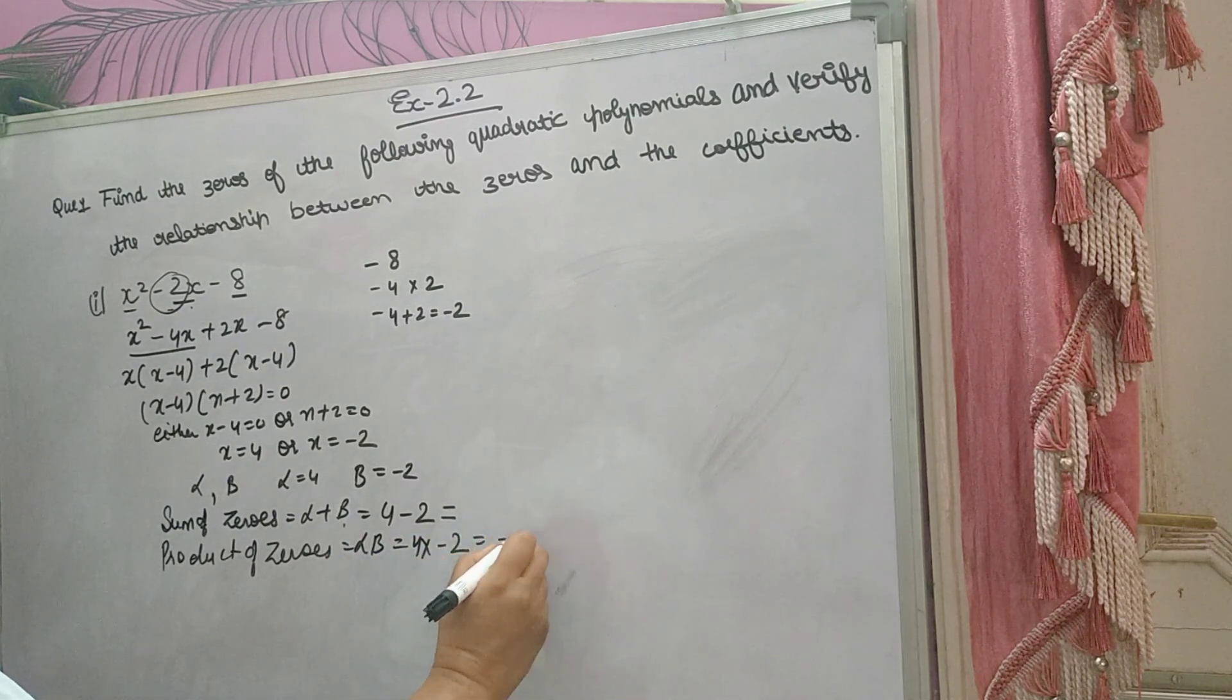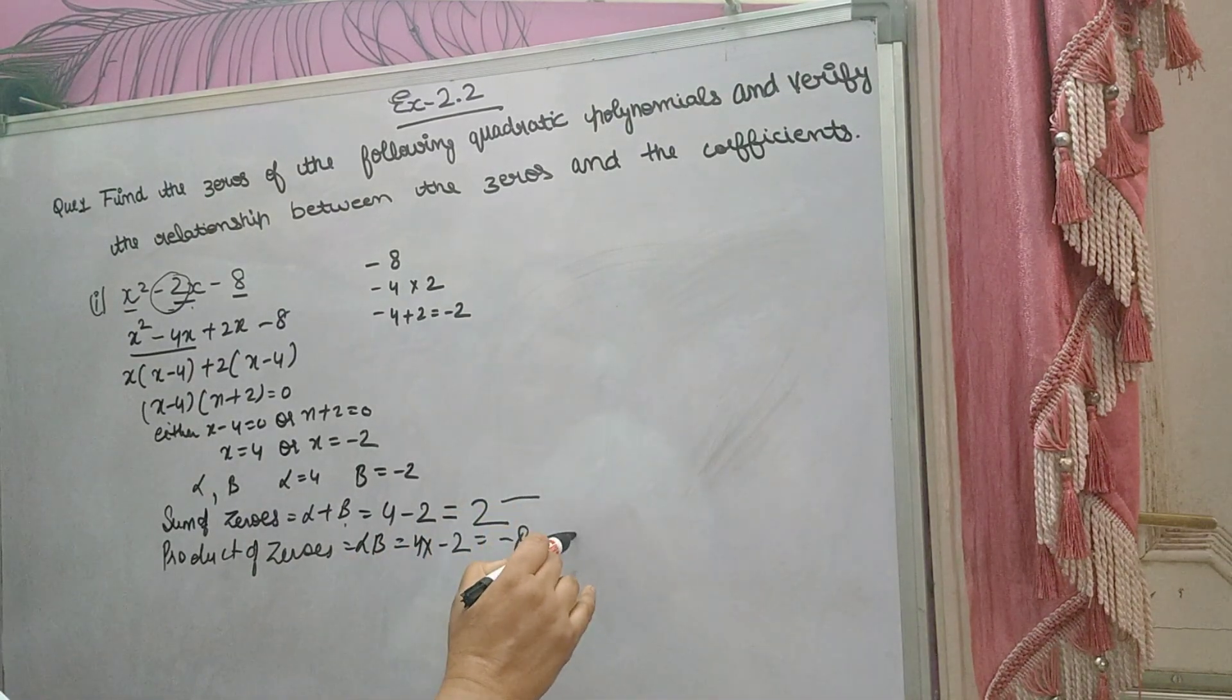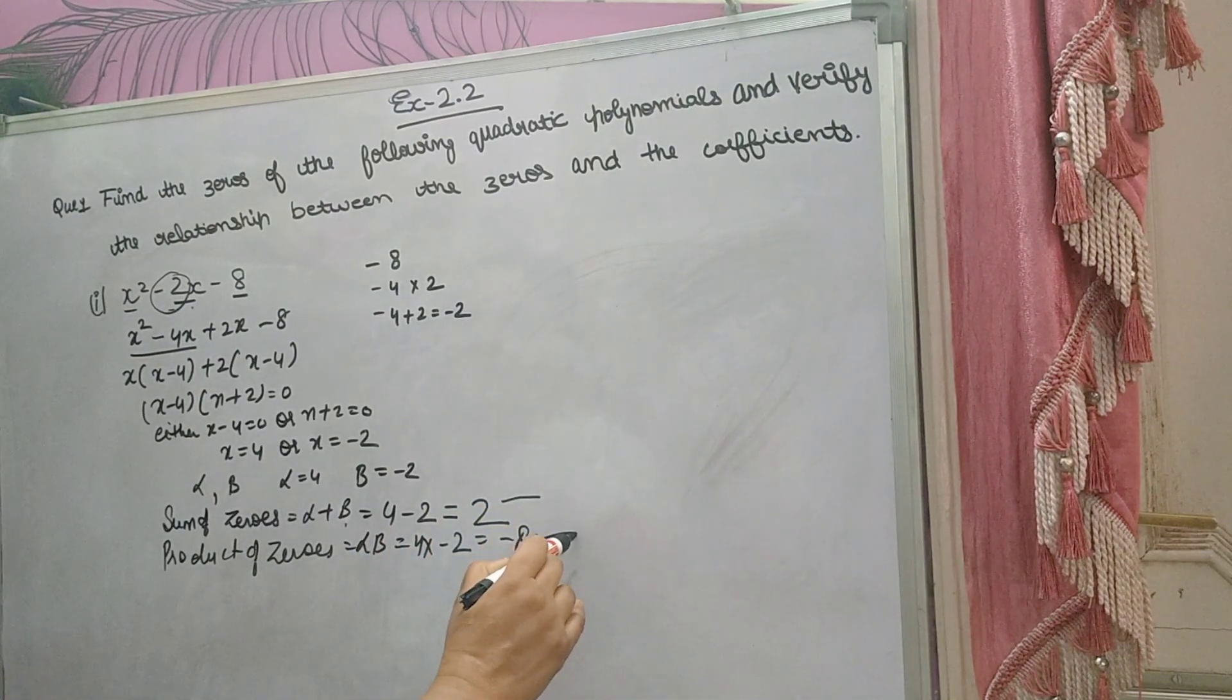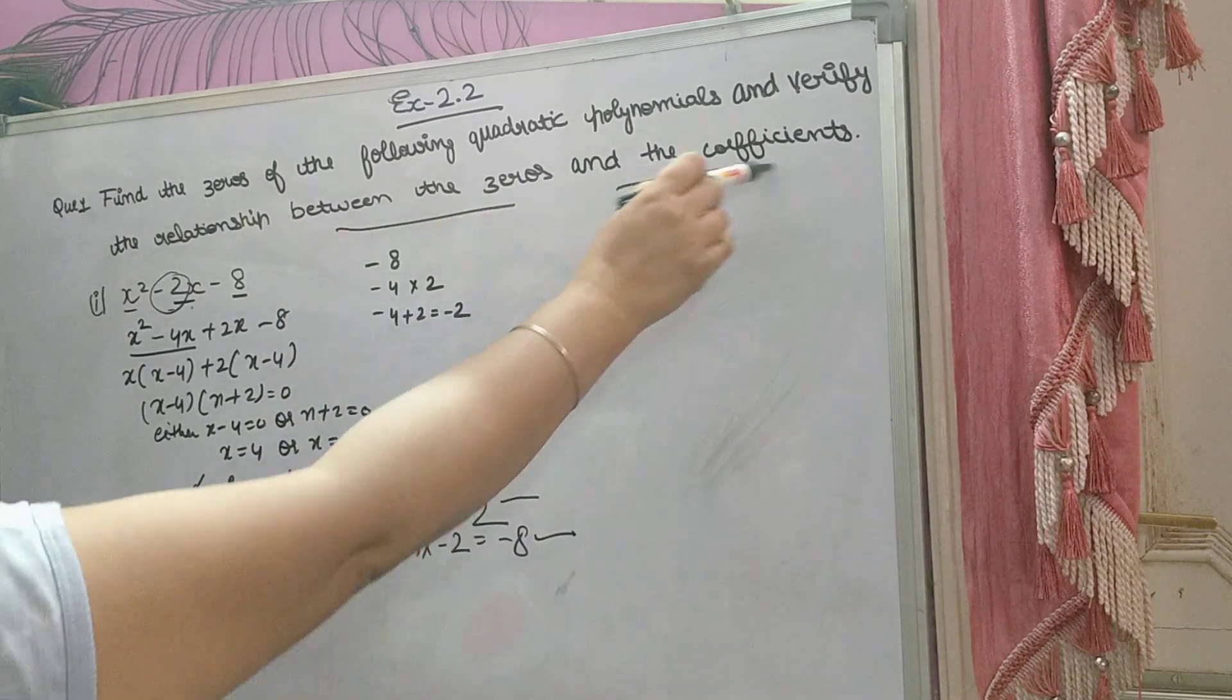That you will get minus 8. Now sum of zeros you got 2 and product of zeros you got minus 8. Now you have to find the relationship between the zeros and the coefficients.